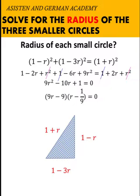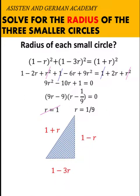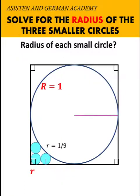This quadratic equation is factorable with factors (9r minus 9) times (r minus 1 over 9) equals 0. Solving for r, we get r equals 1 and r equals 1 over 9. Remember that in our problem the radius of the bigger circle is 1 unit, so the radius of the three identical smaller circles cannot be 1. We rule that out, and we accept small r equals 1 over 9 as the solution.